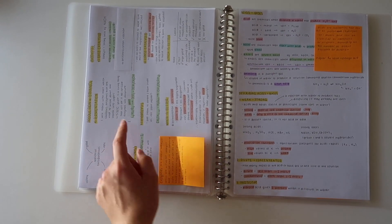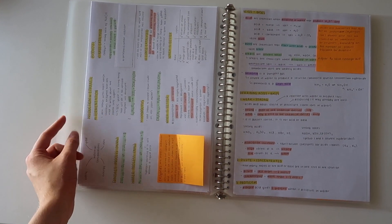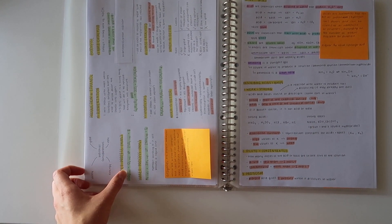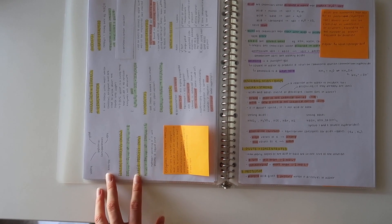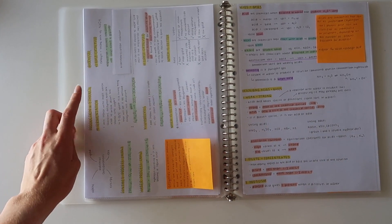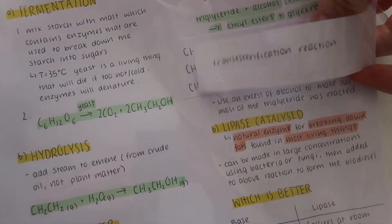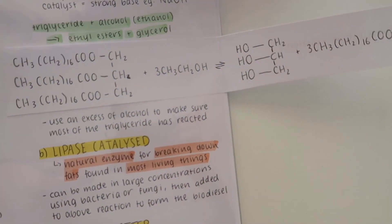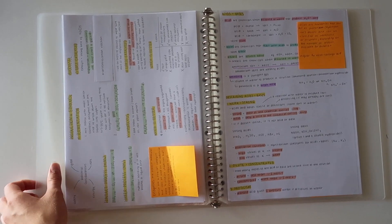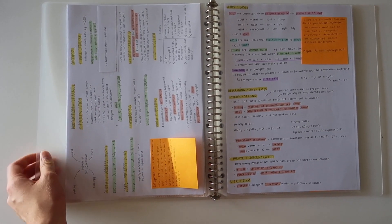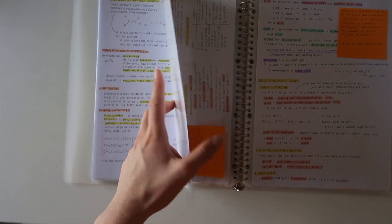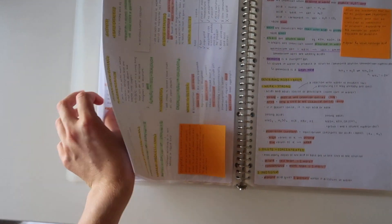On this page is my one-page summary for the industrial processes we needed to know — things like biodiesel, the production of ethanol, the contact process, the Haber process, and so on. That's my one-page summary for those, and I had more detailed notes at the end of that section.